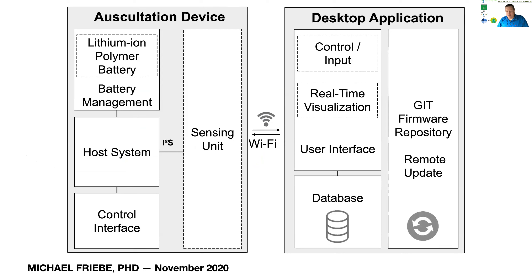This is the setup of the device. We have connected it via WiFi to a desktop application where we can look at the signals in more depth. What we want to do in the next few months is create a local setup where we can determine already whether the signal quality is sufficient or not and do a bit of pre-evaluation. For the subsequent segmentation and evaluation, we would send the data to a desktop or cloud application.